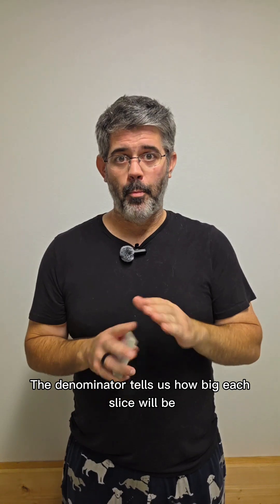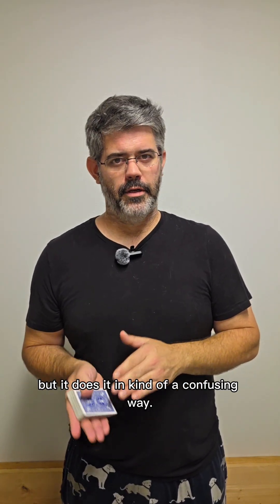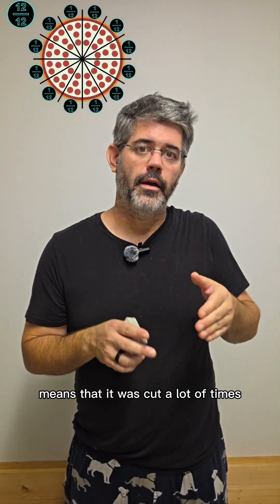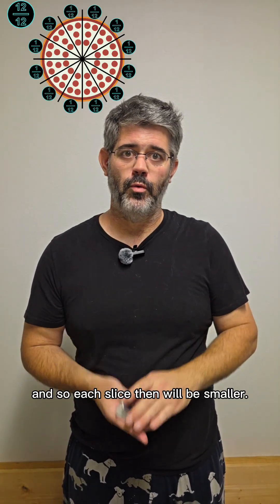The denominator tells us how big each slice will be, but it does it in kind of a confusing way. A large number for the denominator means that it was cut a lot of times and so each slice then will be smaller.